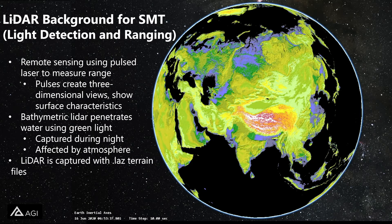Now we're going to take a break from the presentation and discuss what is LiDAR. LiDAR stands for the Light Detection and Ranging System. It uses remote sensing with a pulse laser which is able to measure range and distance. These pulses create three-dimensional views which show the surface characteristics on Earth.